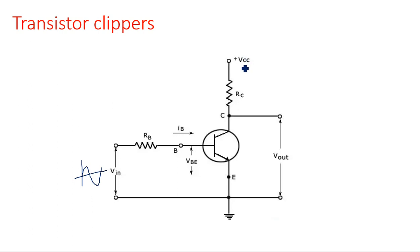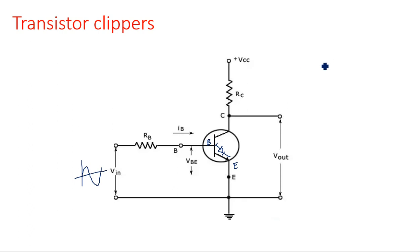VBE is the cut-in voltage of the base-emitter junction, because the base-emitter forms a diode. Another junction exists between the collector and emitter. When the input signal is applied, the base current IB is expressed as: IB = (V_input − V_gamma) / RB, where V_gamma is the cut-in voltage VBE.